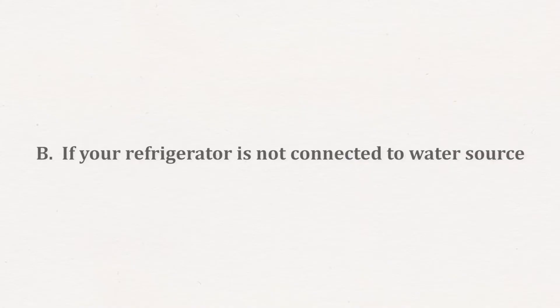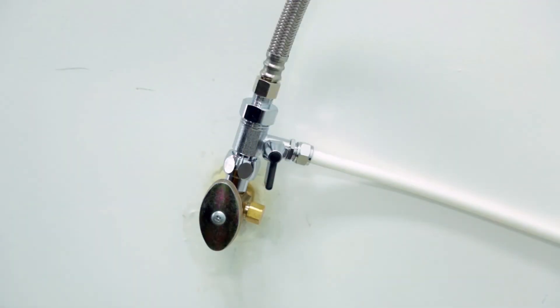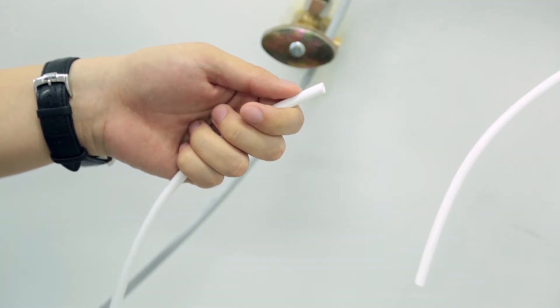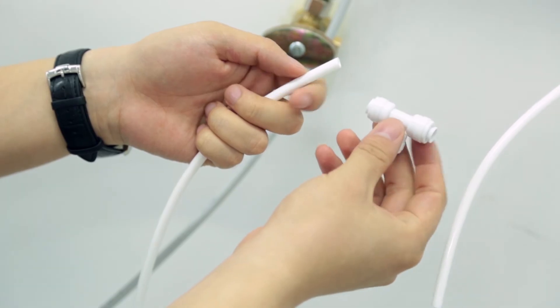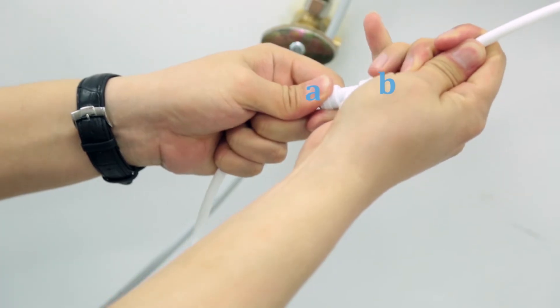If your refrigerator is not connected to water source, shut off the cold water valve connected to water filter. Connect the tubing as the picture shows. Cut the output water tubing at proper position and insert two ends respectively to A and B of the T fitting.